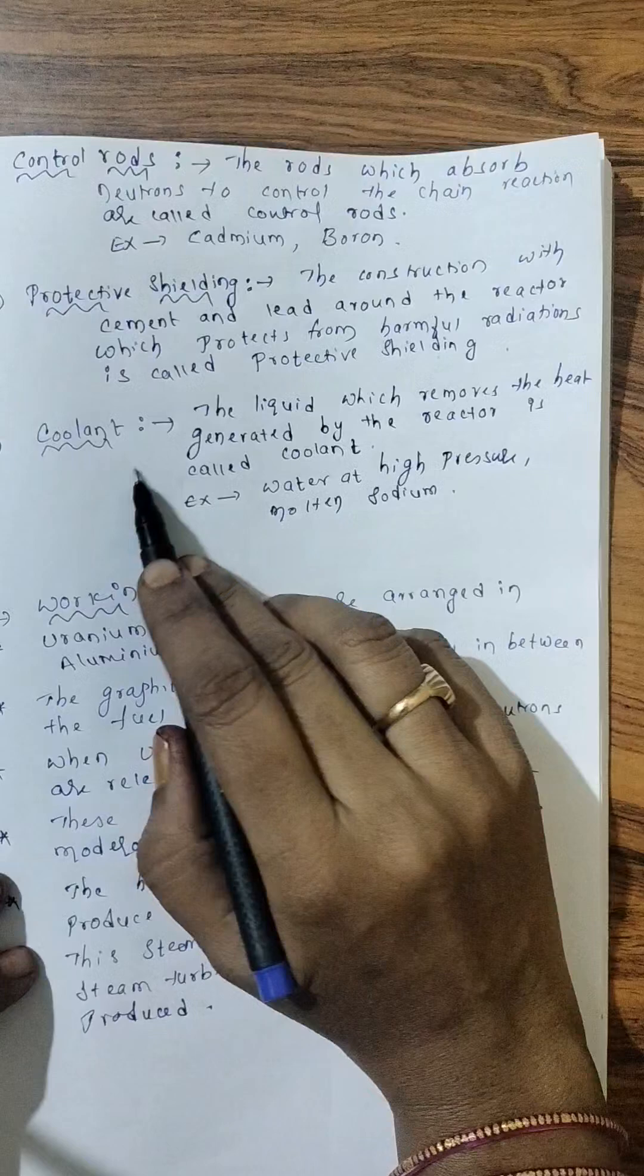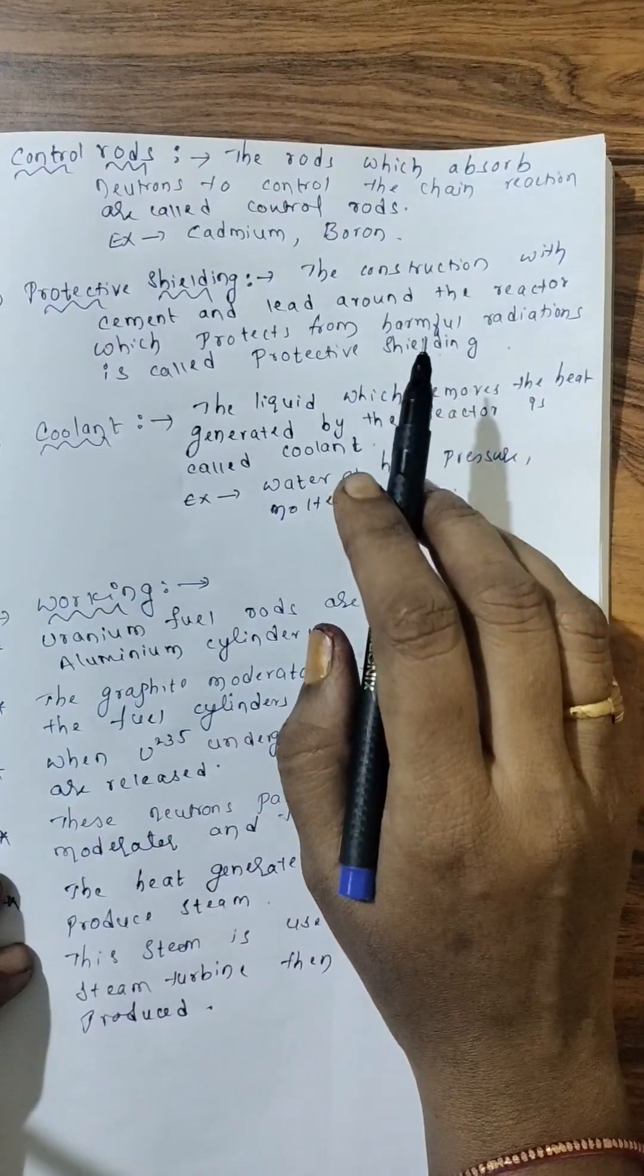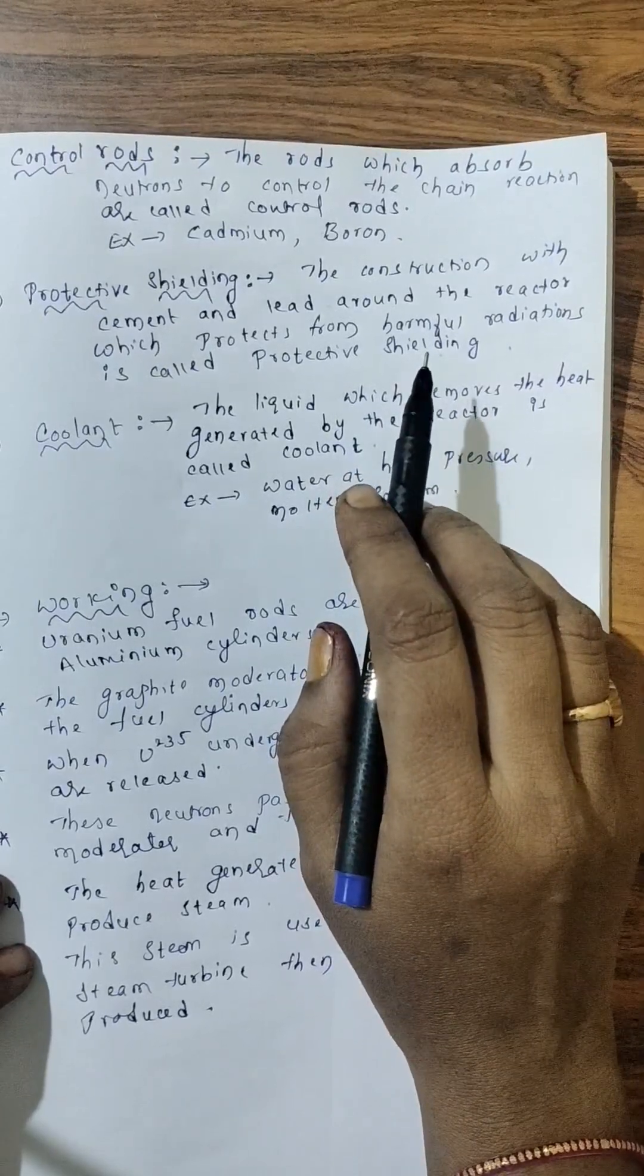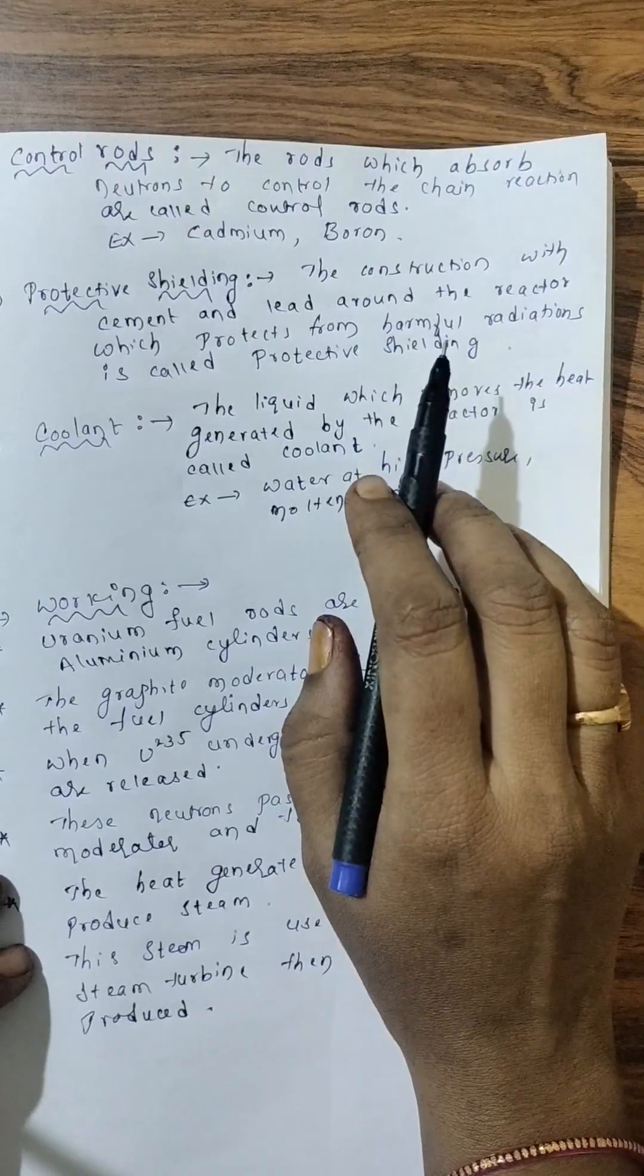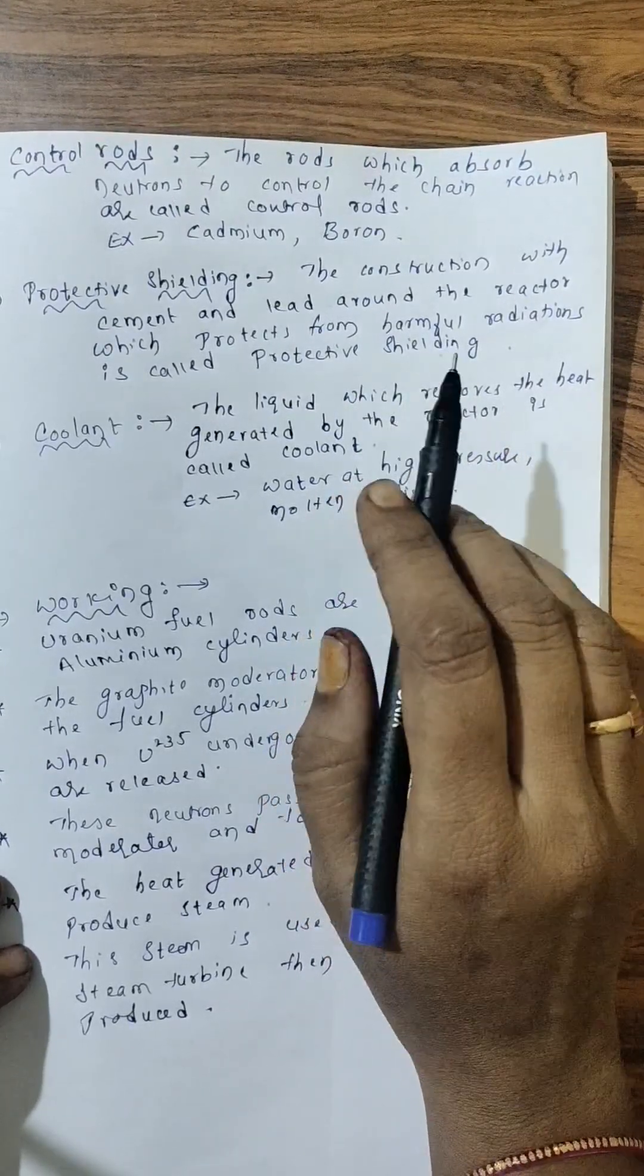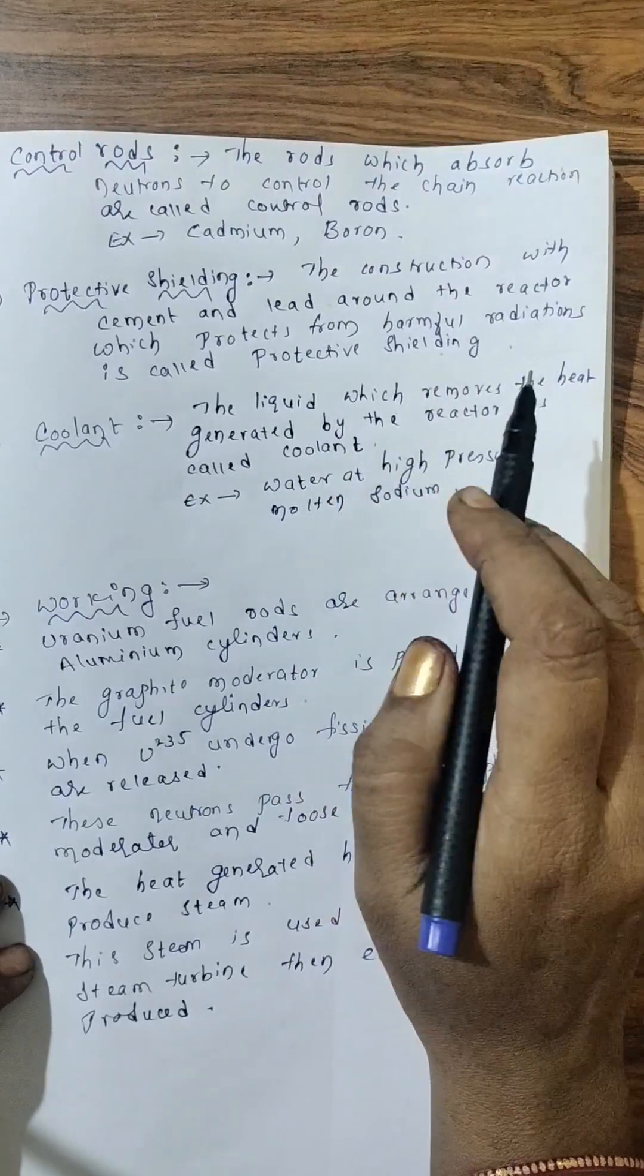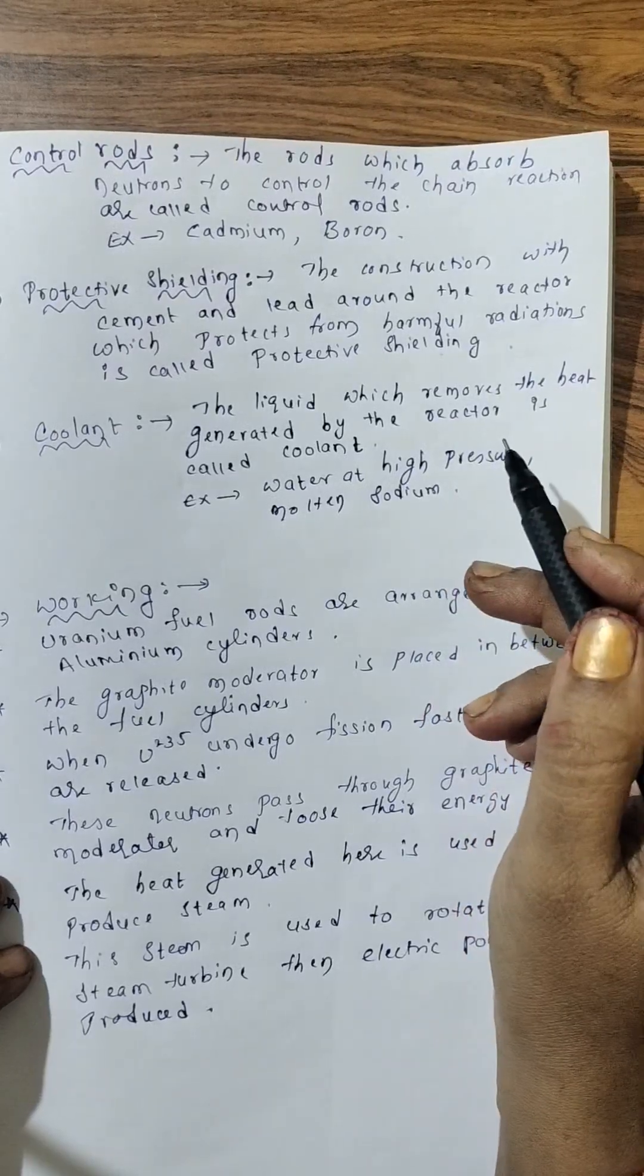Next, coolant. During fission process, anomalous amount of energy is released. Uranium, when bombarded with a neutron, it breaks into barium and krypton. Three neutrons are released. Along that, anomalous amount of energy is released. That is, the heat is generated.